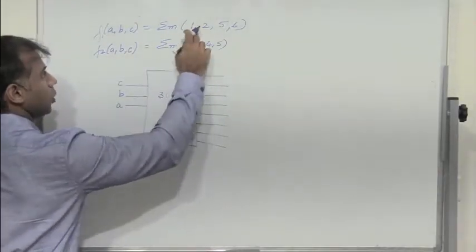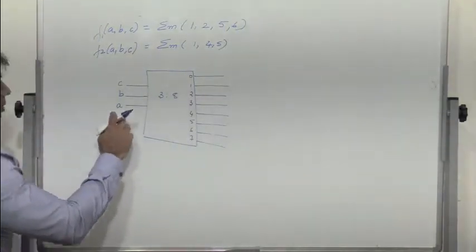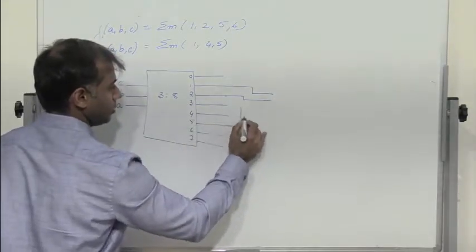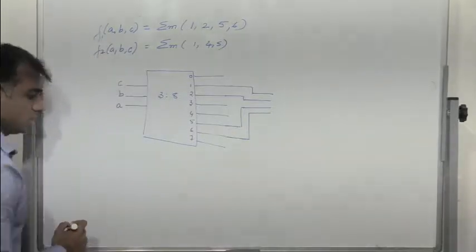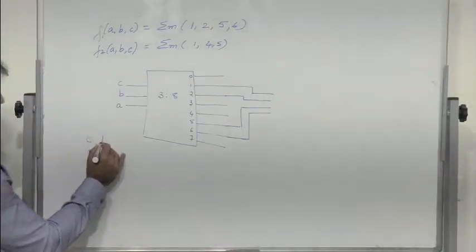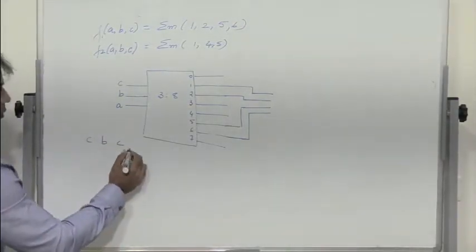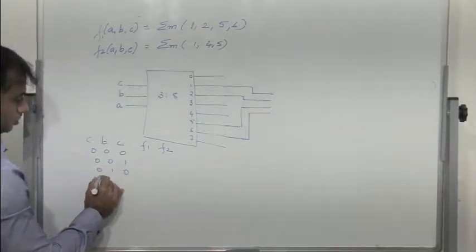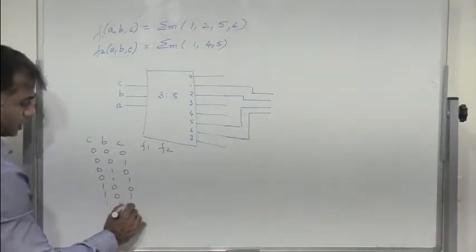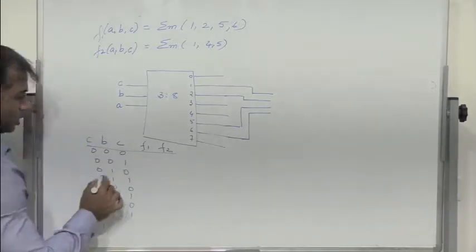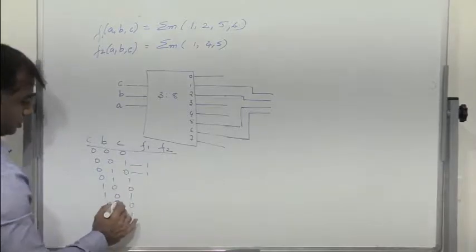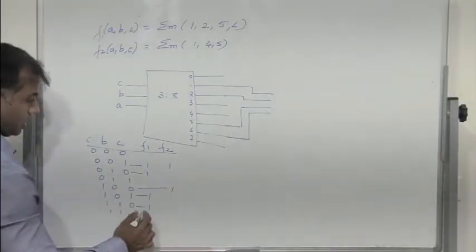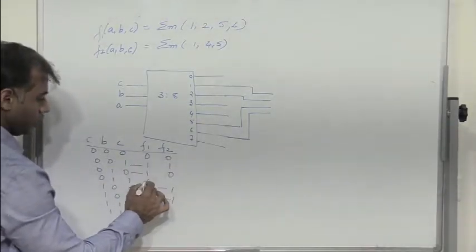For F1, we need high for 1, 2, 5, and 6. We can write a table for F1 and F2 over outputs 0 through 7. F1 is high for 1, 2, 5, and 6, while F2 is high for 1, 4, and 5. For all other input combinations, the output is 0. So F1 is high for inputs 0,0,1 or 0,1,0 or 1,0,1 or 1,1,0, so we pass all these 4 lines to an OR gate to get F1.